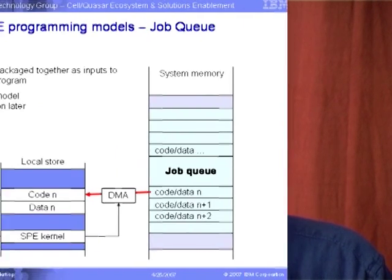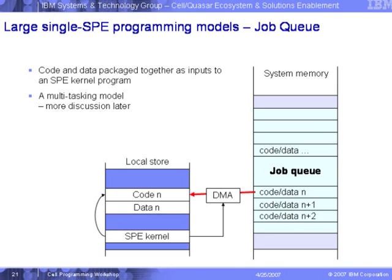Another way to look at it: in system memory you have a program divided into different code and data segments that you can queue up. Depending on execution of the SPU kernel — this is a small SPU program running on the SPU that controls execution of those jobs, not a Linux kernel — it looks for code segment N and data N, requests DMA for the code and data of N, runs that one, and follows through the job queue.